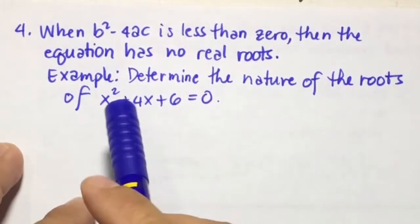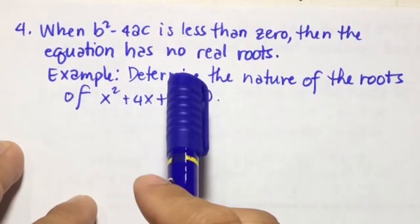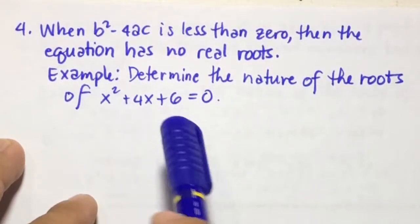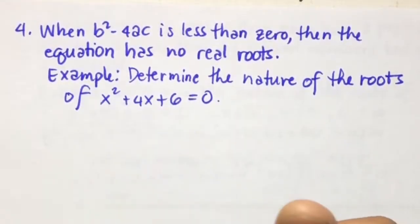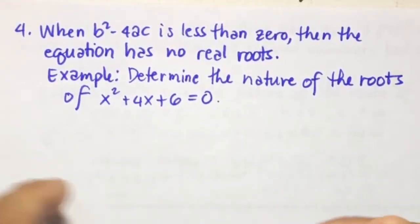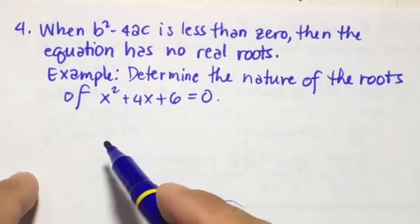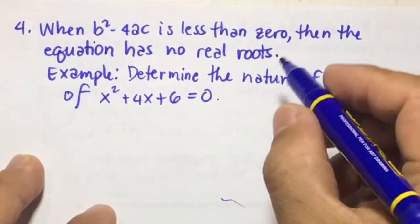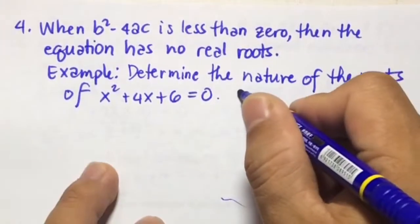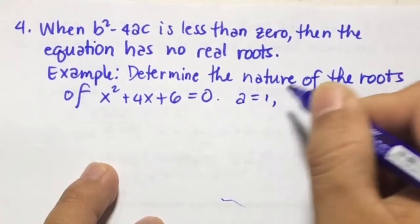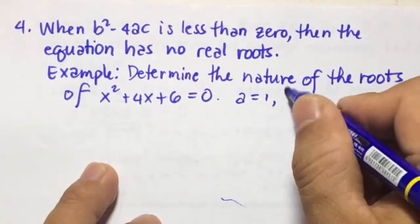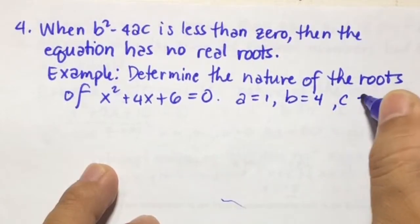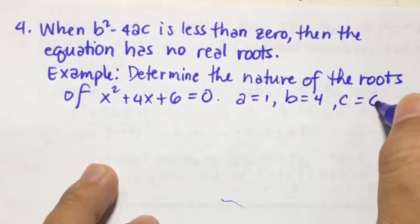Number 4: when b squared minus 4ac is less than 0, then the equation has no real roots. For example, determine the nature of the roots of x squared plus 4x plus 6 equals 0. So a is equal to 1, b is equal to 4, and c is equal to 6.